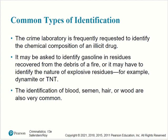Common types of identification: the crime laboratory is frequently requested to identify the chemical composition of an illicit drug. It may be asked to identify gasoline in residues recovered from fire debris, or identify the nature of explosive residues — for example, dynamite, trinitrotoluene, or nitroglycerin. The identification of blood, semen, hair, or wood are also very common.